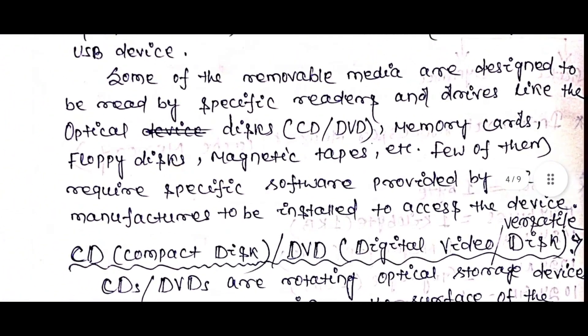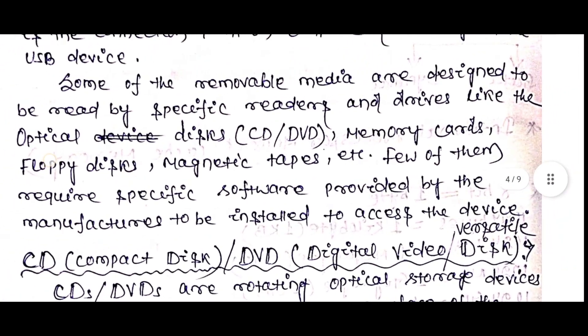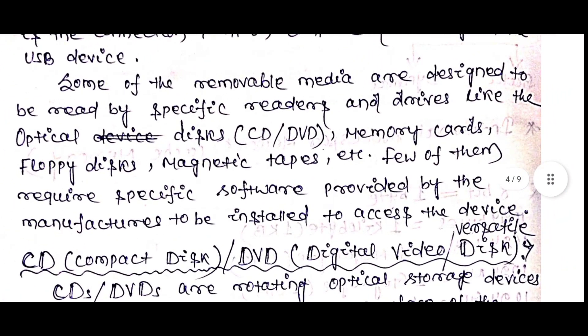Some of the removable media are designed to be read by specific readers and devices, like the Optical Disc — like the CD and DVD.